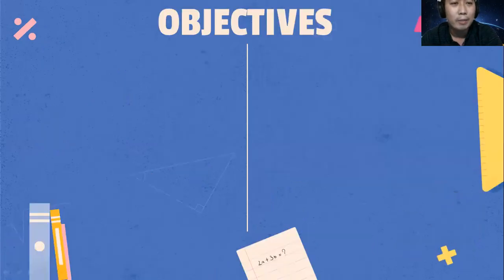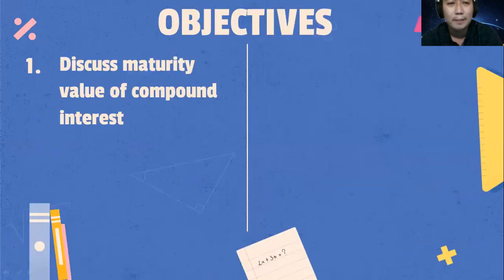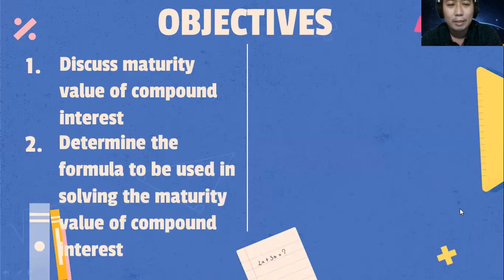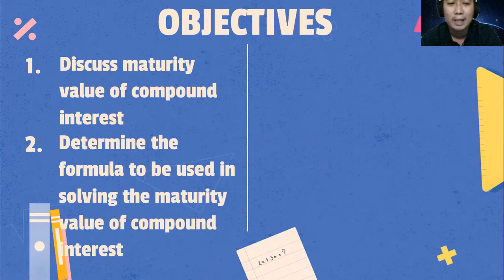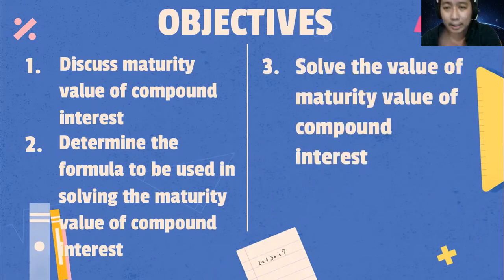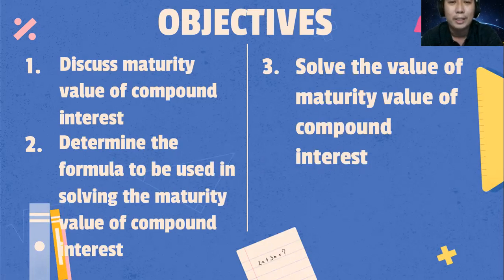What are the objectives of this lesson? Number one, discuss the maturity value of compound interest. Number two, determine the formula to be used in solving the maturity value of compound interest. And number three, solve the maturity value of compound interest.